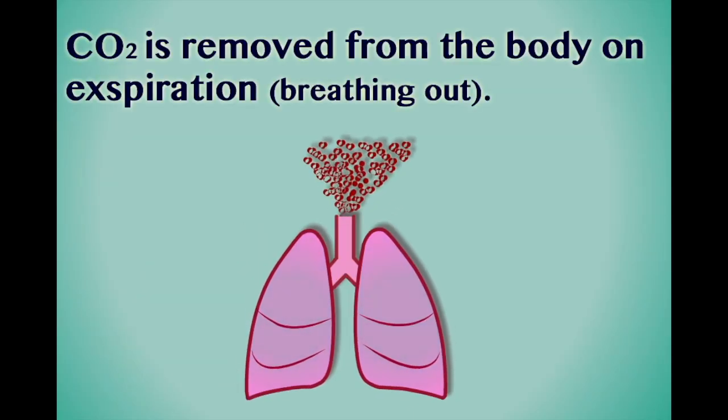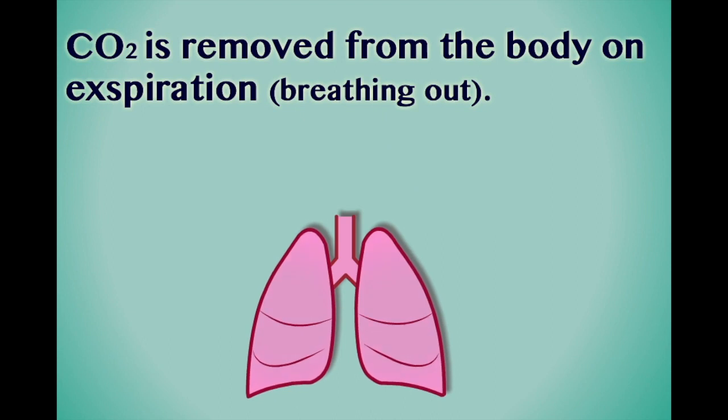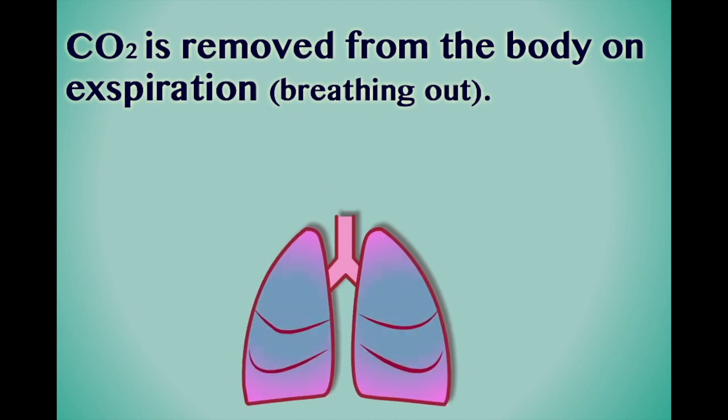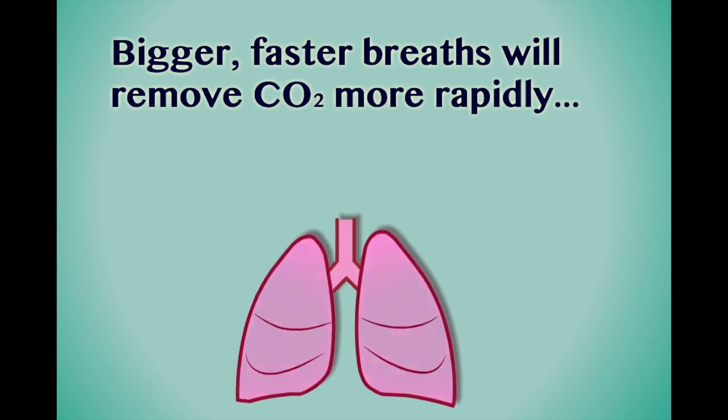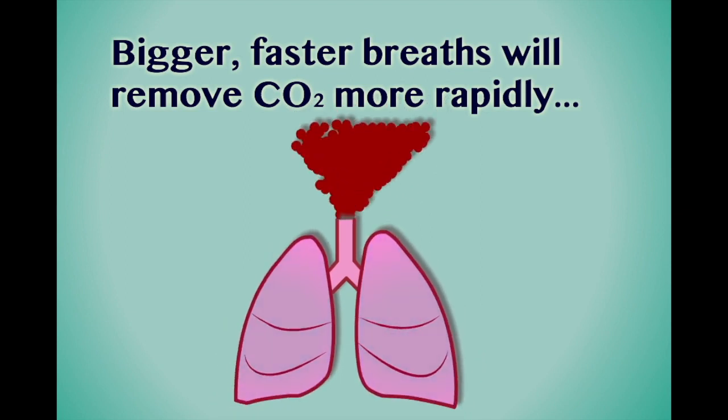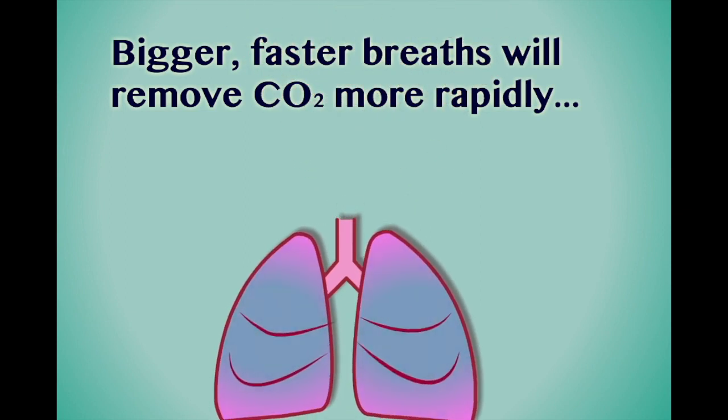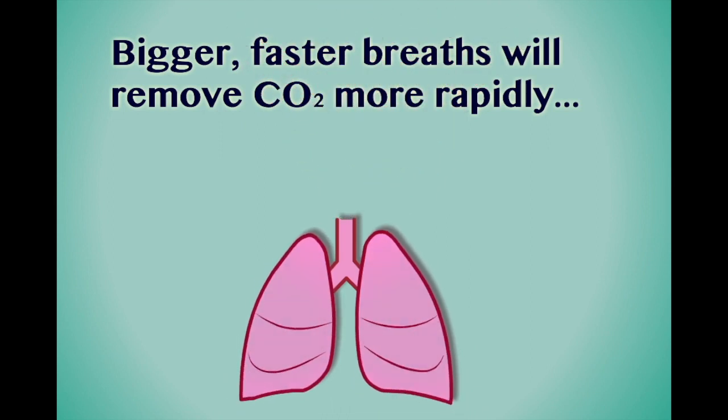CO2 is removed from the body by the lungs on expiration. The more effort put into expiration, the more rapidly CO2 will be excreted. We can now begin to understand the relationship between the respiratory system, carbon dioxide and blood pH.